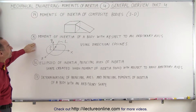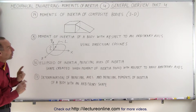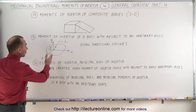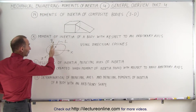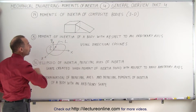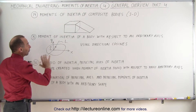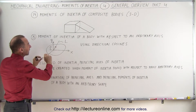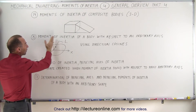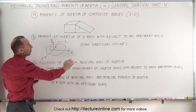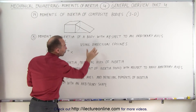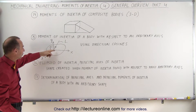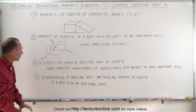We're going to find the moment of inertia of a body with respect to an arbitrary axis. Here is an arbitrary axis called L, and here's the L unit vector. We're going to find the moment of inertia of this body with respect to any arbitrary axis, using the direction cosines relative between the axis and the XYZ axes.